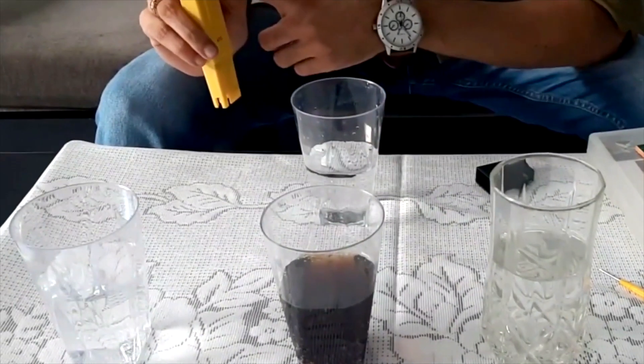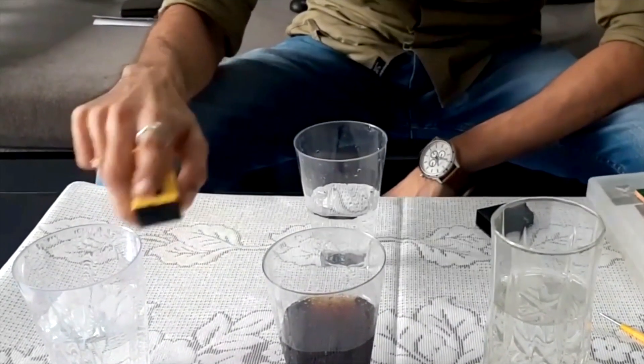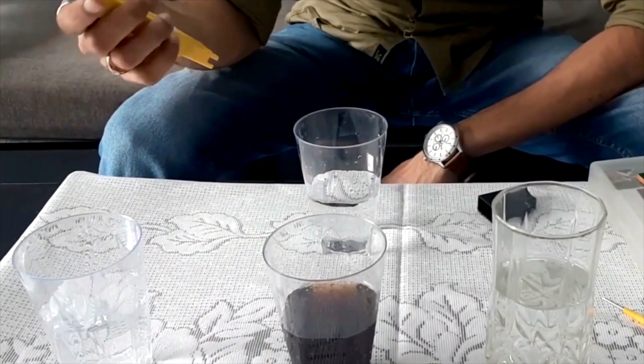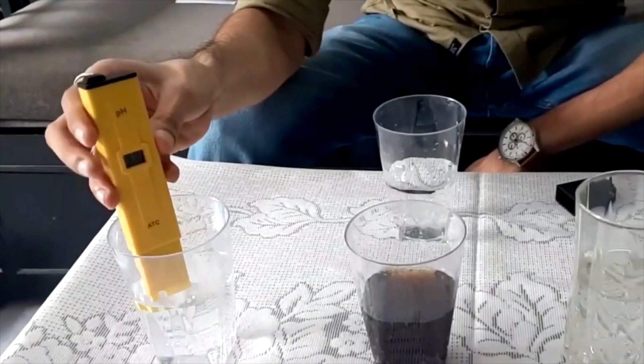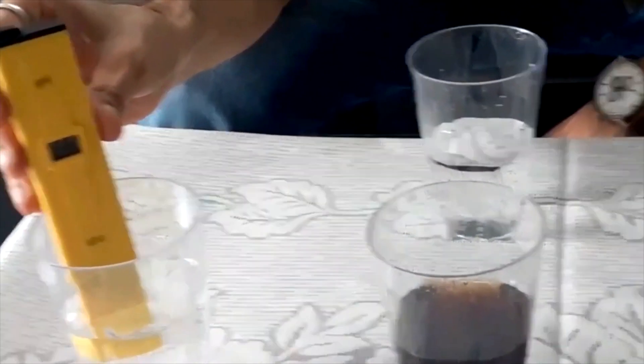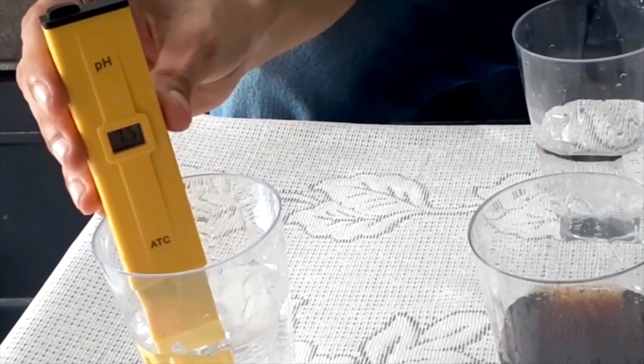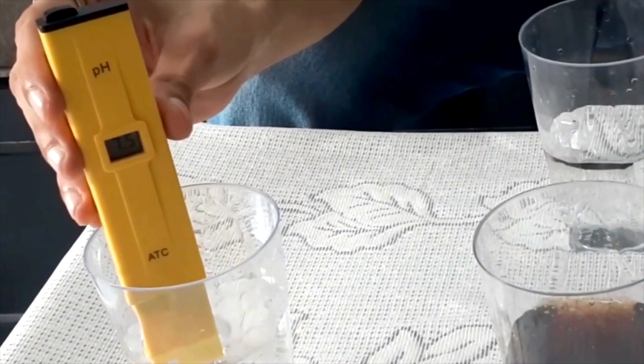We will check pH of some of the most common liquids available around us. A point here and there is not a major problem for home growers. First we'll check the pH of mineral water. The pH is around 7.1 or 7.2.